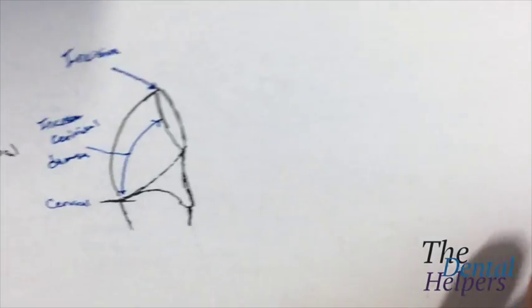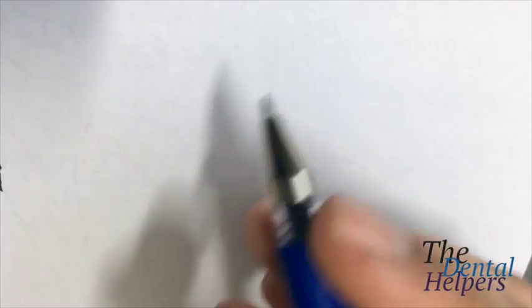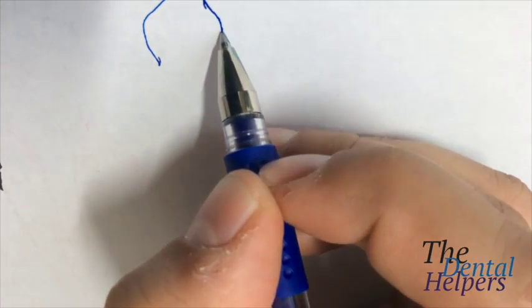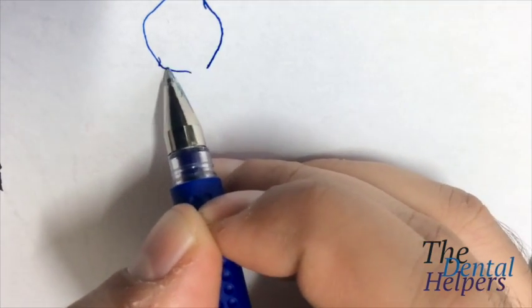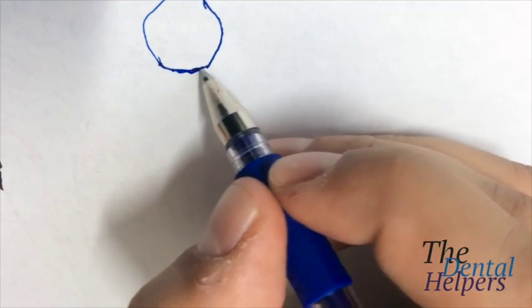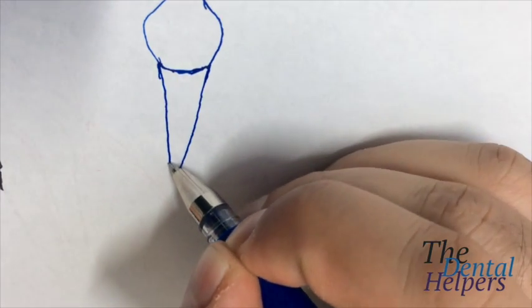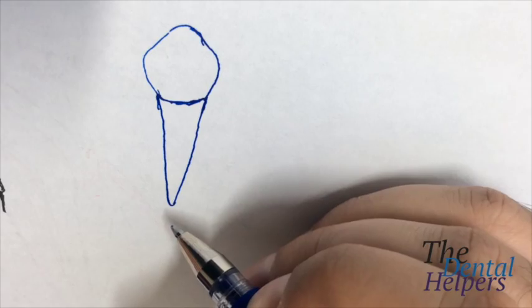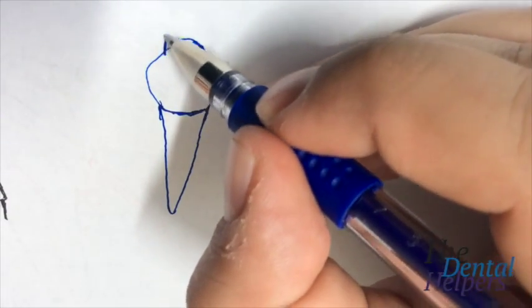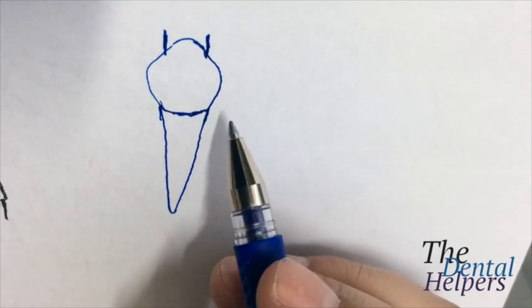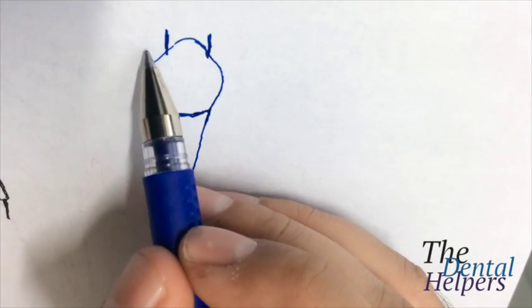The other thing to consider is the thirds of the tooth. So if we were to give a general drawing, so this right here is a canine, and it has a decent size root. So we have our canine here, and typically we break teeth into what are known as thirds. So we have our first third right here.